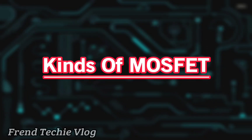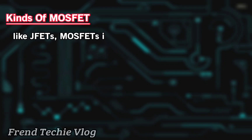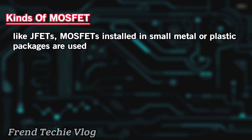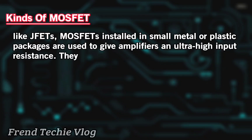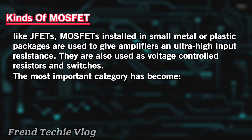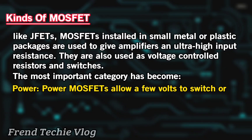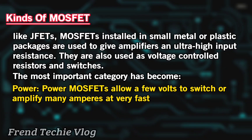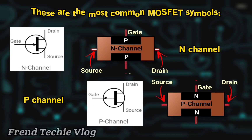Like junction field-effect transistors, MOSFETs in small metal or plastic packages are used to give amplifiers an ultra-high input resistance. They are also used as voltage-controlled resistors and switches. The most important category has become Power — Power MOSFETs allow a few volts to switch or amplify many amperes at very fast speeds. These are the most common MOSFET symbols for the N-channel and P-channel.